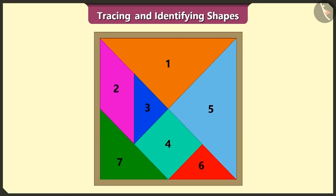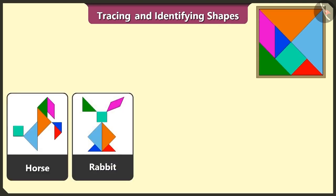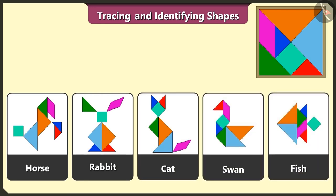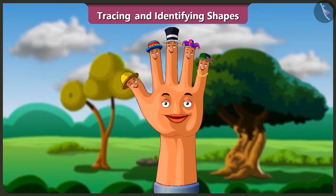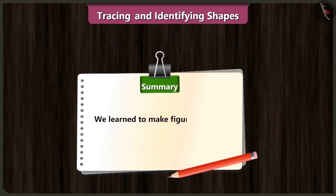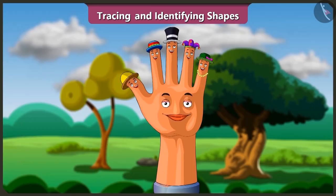We have finally created a horse, rabbit, cat, swan, and a fish using the seven shapes of the tangram. Friends, today we learned to make figures using shapes of a tangram in an interesting way. In the next video, we will learn about lines and their different types.